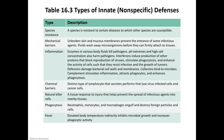If foreign pathogens get into your bloodstream, your body responds in a nonspecific manner by producing interferons. Interferons induce production of other proteins that block the production of viruses, stimulate phagocytosis, and enhance the activity of cells to resist infection and tumor growth. There are other proteins called defensins, which damage bacterial cell walls and cell membranes. Collectins bind to microbes. Complement stimulates inflammation, attracts phagocytes, and enhances phagocytosis.